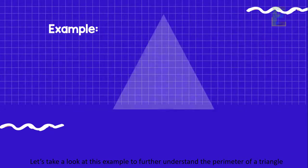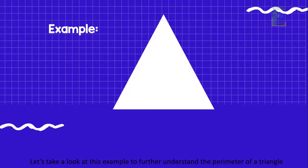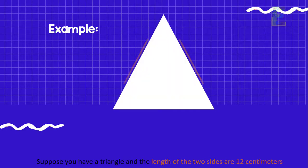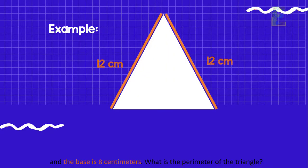Let's take a look at this example to further understand the perimeter of a triangle. Suppose you have a triangle and the length of the two sides are 12 cm and the base is 8 cm. The question is, what is the perimeter of the triangle?